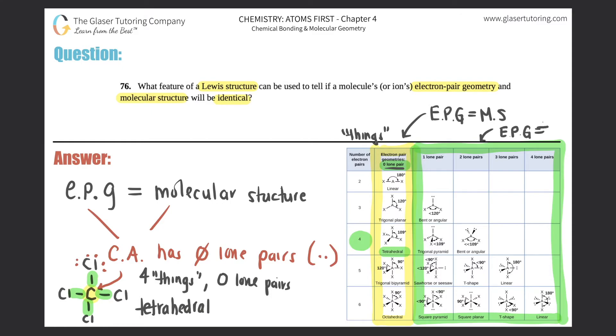For example, going back to carbon tetrachloride, the electron pair geometry would be tetrahedral and also the molecular structure would be tetrahedral. But now let's take for example water. Water has a Lewis structure like this—it has two bonds and two lone pairs. But if you look around the central atom, there are technically four things: two bonds (one, two) and two lone pairs. So there's four things total, but there's two lone pairs.